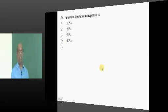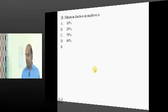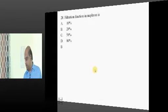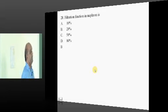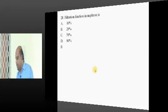Expiration is usually a passive process. A filtration fraction of the nephron is how much?